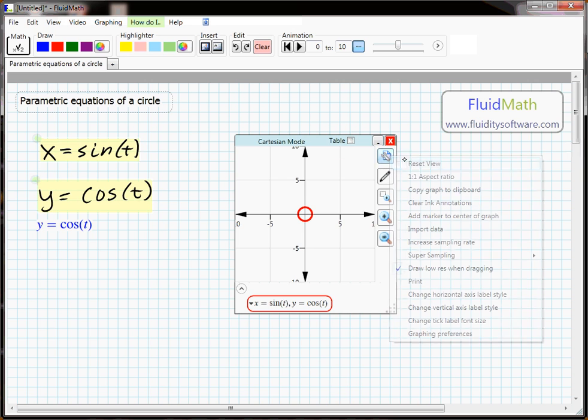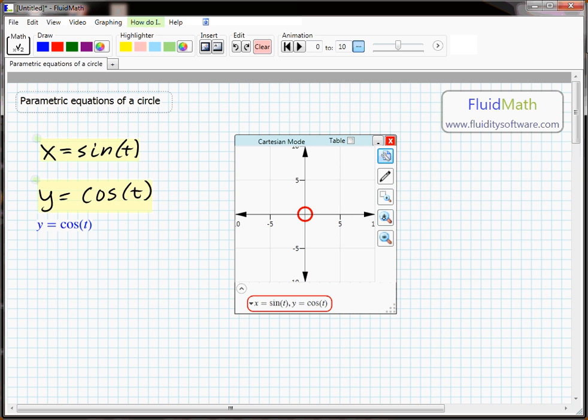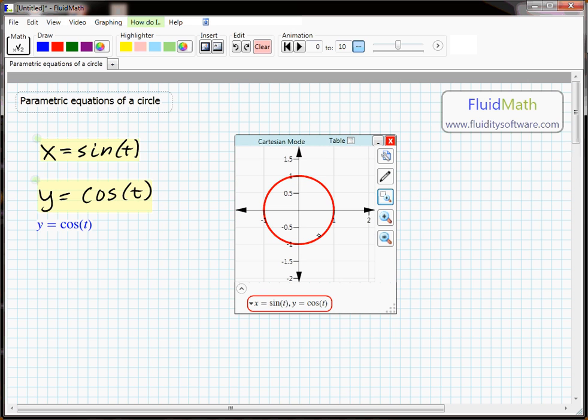Let's set the aspect ratio of the graph to be one to one, and we'll use the box zoom to zoom in on this circle.